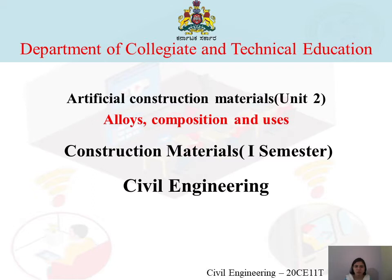In ferrous metals, we learned the properties and uses of pig iron, cast iron, wrought iron, and steel — two types: mild steel and high carbon steel. Ferrous metals are metals in which iron is the main constituent. Depending on iron content, there are two types: ferrous metals and non-ferrous metals. Non-ferrous metals are those in which iron is not the main constituent.